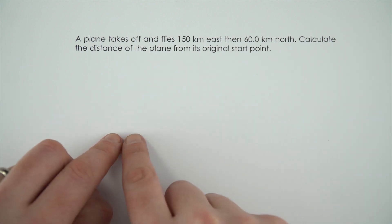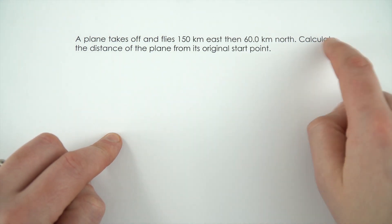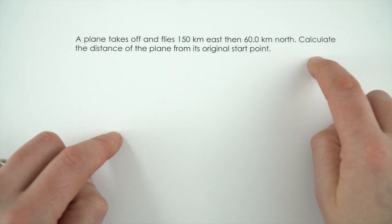In this question a plane takes off and flies 150 kilometres east and then 60 kilometres north. We need to calculate the distance of the plane from its starting position. So I'm going to be using Pythagoras to do this.